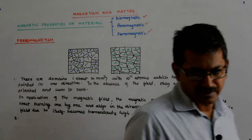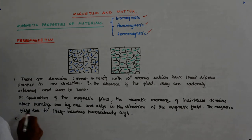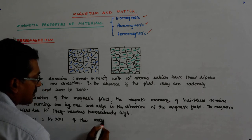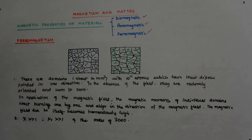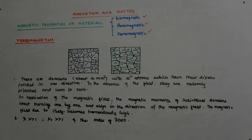This domain behavior does not happen in diamagnetic or paramagnetic materials — that is why ferromagnets have chi very much greater than one, and μr (relative permeability) also very much greater than one, of the order of 3000. The field inside is about 3000 times the field outside. That is something wonderful.